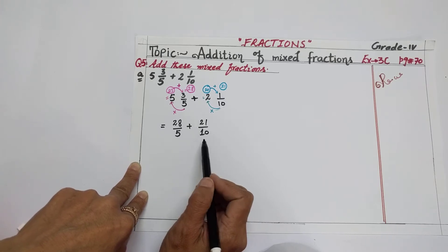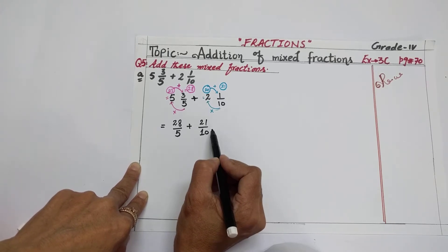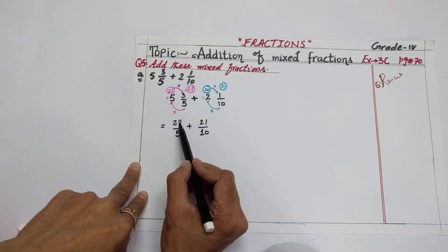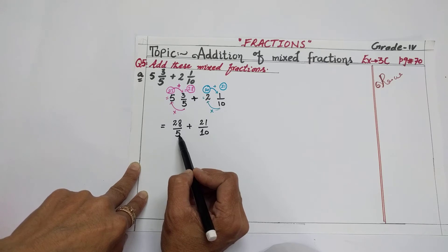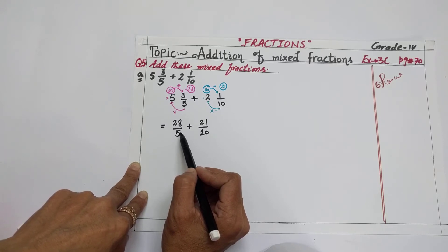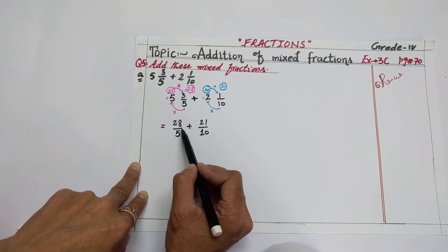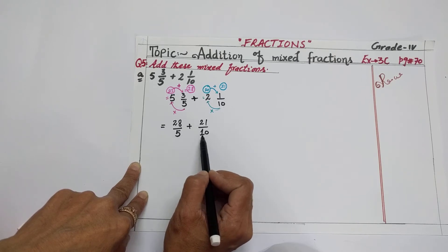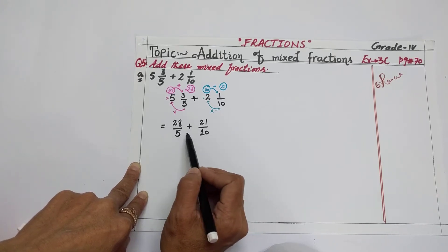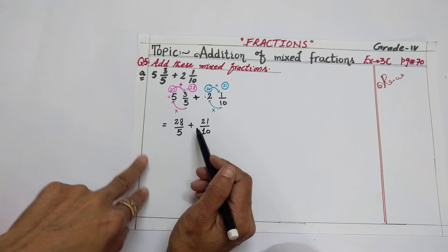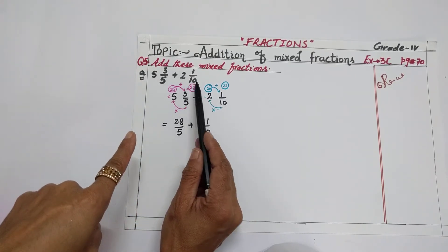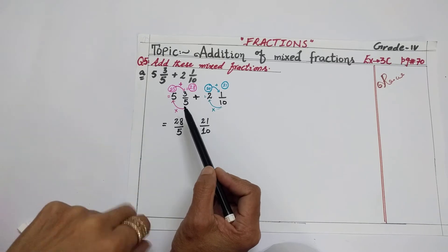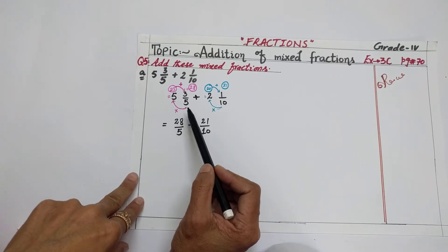What is an improper fraction? Improper means the numerator is greater than the denominator. So 28 is greater than 5, and 21 is greater than 10 — both are improper fractions. So the first step is: convert the mixed fraction into an improper fraction.